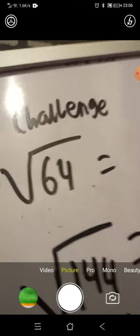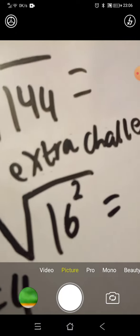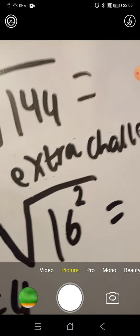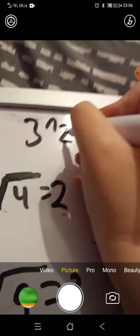So now I have three challenges for you. Challenge: square root of sixty-four, if you want to. Square root of 144, and an extra challenge: square root of sixteen to the power of two. So this small number is, you know, when we done earlier today, to the power—it's basically the same but just without the symbol and the number is smaller.